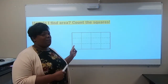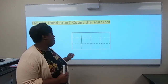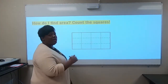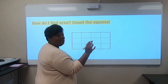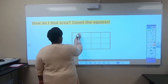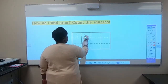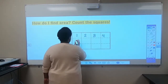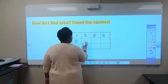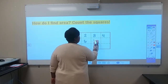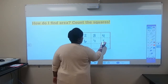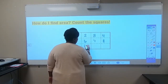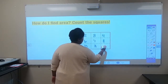Let's do that here so we can find the area of this rectangle. I'm going to start with the very first square and number across: one, two, three, four, five, six, seven, eight, nine, ten, eleven, twelve.